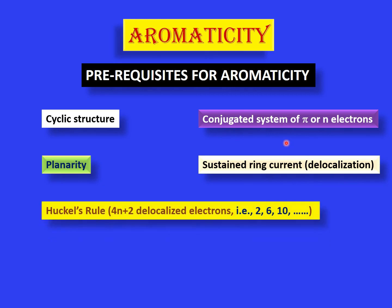These delocalized electrons must be in a specific number, defined by Hückel's rule. Hückel's rule states that the delocalized electrons must be in 4n + 2 numbers, where n is any whole number starting from 0. So if n = 0, then 4(0) + 2 = 2. If n = 1, then 4(1) + 2 = 6. If n = 2, then 4(2) + 2 = 10.